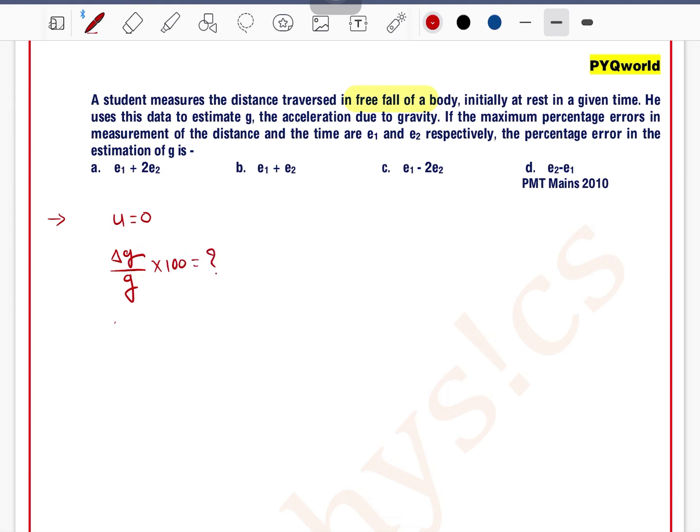So percentage error in g can be written as delta g by g times 100. It is given that delta h by h times 100 is given as e1, and delta t by t times 100 is given as e2.